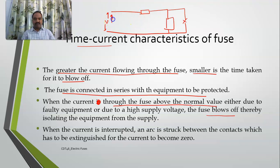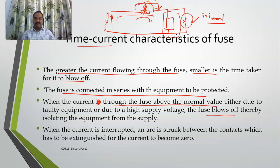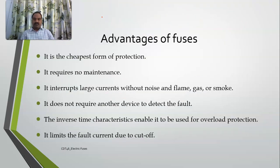Even if there is an excessive voltage or a short circuit, the current becomes greater than the normal value and the fuse will automatically blow, protecting your system. When the fuse blows, the current is suddenly interrupted and sometimes an arc may appear. You are supposed to extinguish the arc; otherwise there is no use in the fuse blowing. Once the arc is extinguished, the equipment will be protected.